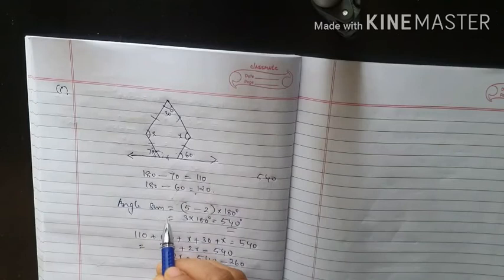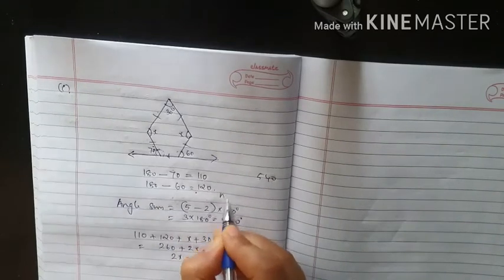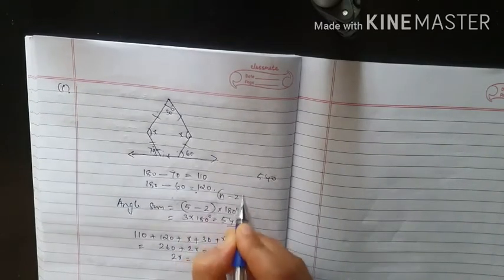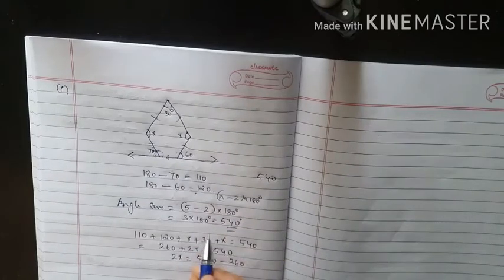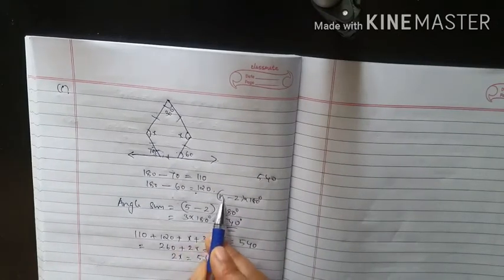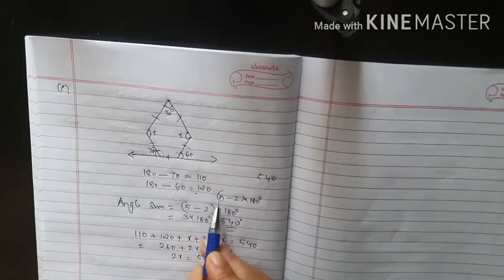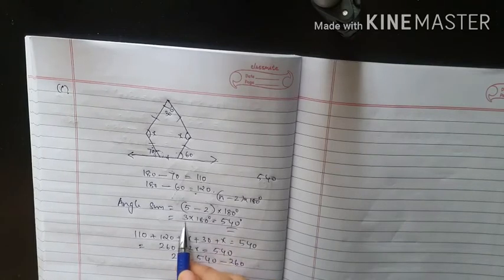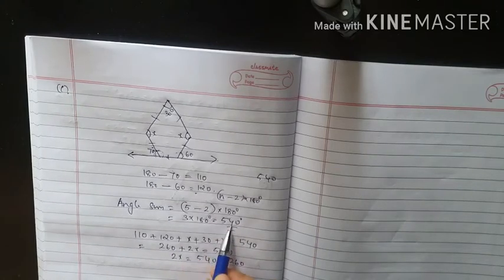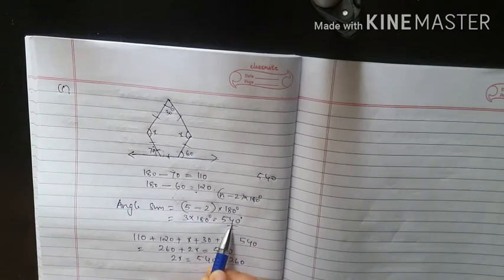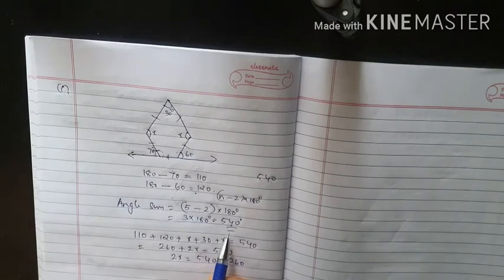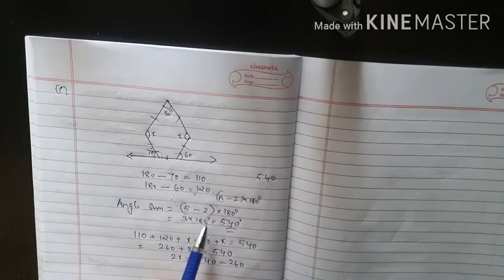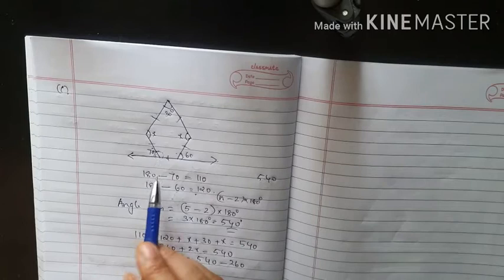The angle sum of a polygon is (n-2) × 180 degrees. This figure has 5 sides, so n = 5. Therefore the angle sum is (5-2) × 180 = 3 × 180 = 540 degrees. The sum of all the angles is 540 degrees.